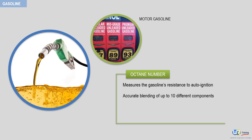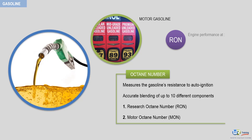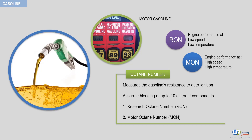You can find more about this in our petroleum refining course. Octane numbers are measured in two ways: by the Research Octane Number (RON) or by the Motor Octane Number (MON). The Research Octane Number measures engine performance at low speed and at low temperature, while the Motor Octane Number is relevant to engine performance at high speed and at high temperature. The octane number is in fact an empirical measure.